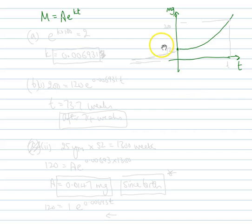The thing we're told is the mass of the tumor doubles every 100 weeks. So the first part is find k. We know that when t is 100 then the mass is doubled. So in other words, e to the k times 100 equals 2.